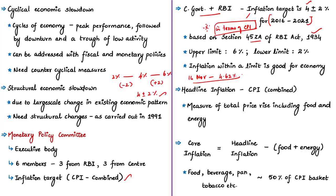Inflation indicates a continuous increase in price; inflation within a limit is good for the growth of the economy. There will be demand on one side and supply on the other side. If supply does not meet demand, prices increase, indicating that production in the economy can grow further. Supplies will increase, ensuring all available resources are optimally used to achieve maximum possible growth. Always remember that inflation within a limit is good for economic growth.